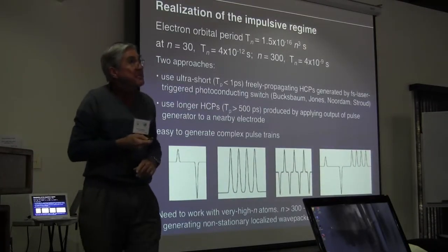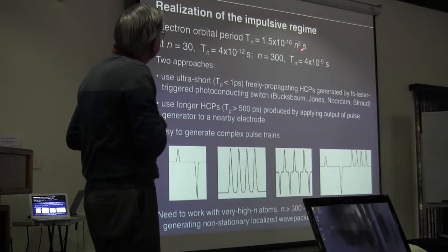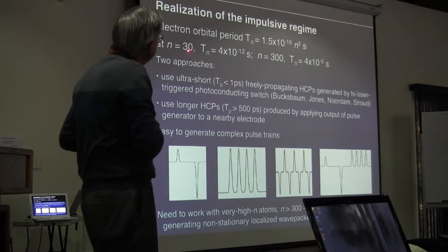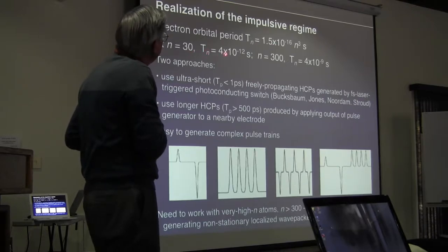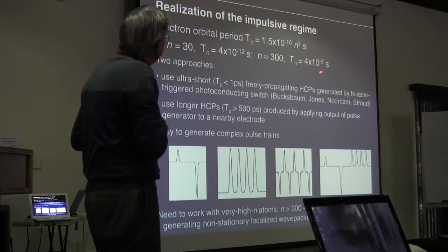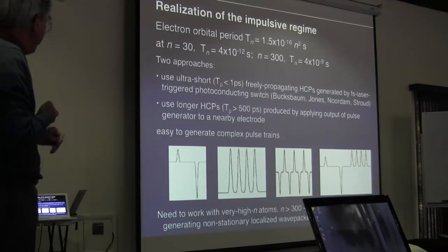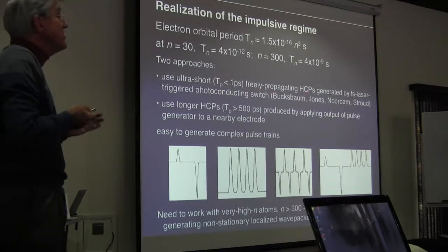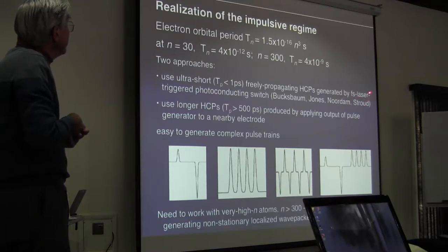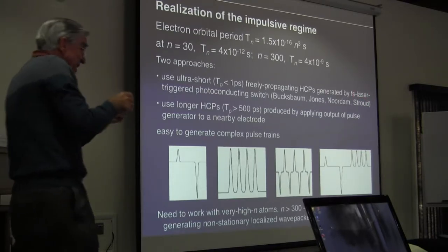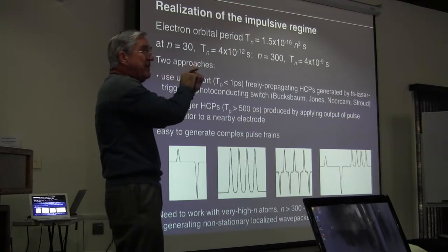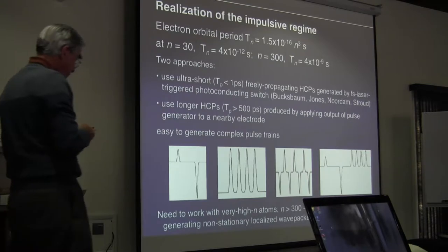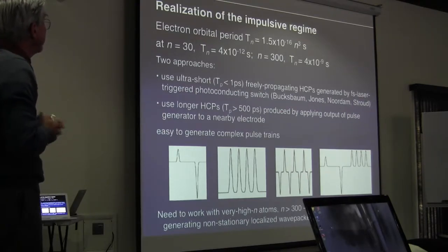How can you get into this impulsive regime? The orbital period scales as n cubed: it's 1.5 × 10⁻¹⁶ times n cubed seconds. At n equals 30 the Kepler period is about a few picoseconds; at n equals 300 it's several nanoseconds. Two approaches have been used. The first is to use ultra-short, sub-picosecond, freely propagating half-cycle pulses generated by taking a photoconducting switch and triggering it with a femtosecond laser pulse — the switch across a capacitor becomes a conductor, producing a large current pulse that creates a propagating half-cycle pulse traveling in space. This has been used profitably by a number of researchers.